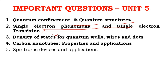The split-ups include quantum wells, quantum wires, quantum dots, and carbon nanotubes — their properties and applications are confirmed questions in Unit 5. Spintronic devices and their applications in Part A are also very useful to go through.